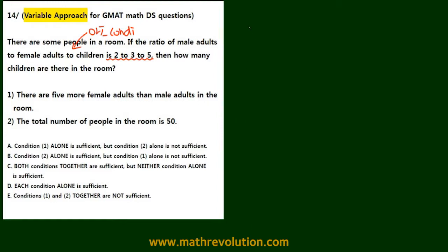First, in a variable approach method, we have to modify the original condition. So what we have is m equal to 2k, f equal to 3k, and c equal to 5k to represent the ratios. Right now we have four variables: m, f, c, and k.